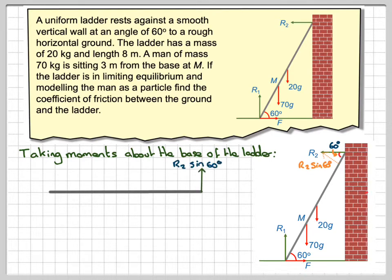So, I'm going to add it on to my diagram here. This is R2 sin 60. I'm taking moments about this point here. So, it's going to be R2 sin 60 times 8. That is going to be the anti-clockwise moment.